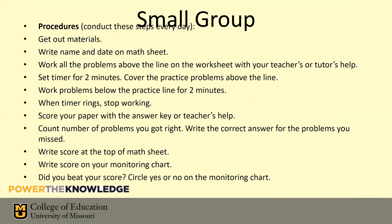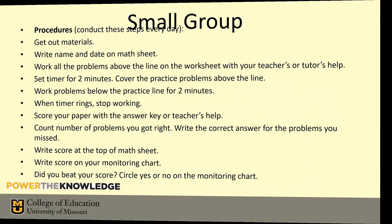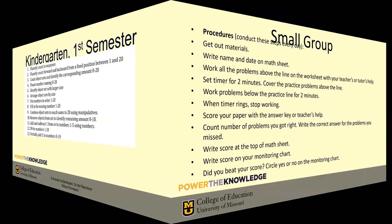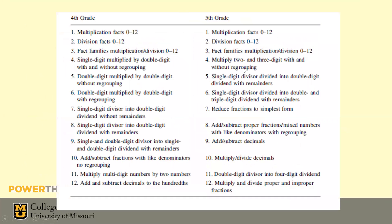One of the most important missing pieces in small group tier two math intervention is modeling. Take all the kids who are low on, say, objective four — multiply two- and three-digit numbers with and without regrouping — put those kids together, sit down with them for two minutes, do a quick model showing them how to do it, have them work it out together and share with each other, then they practice on their own while the teacher moves on to the next group.